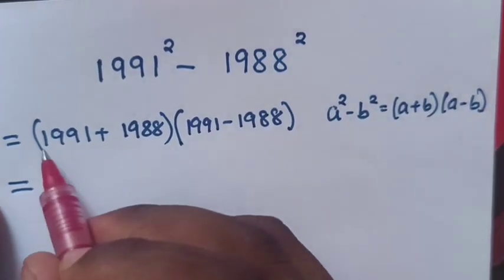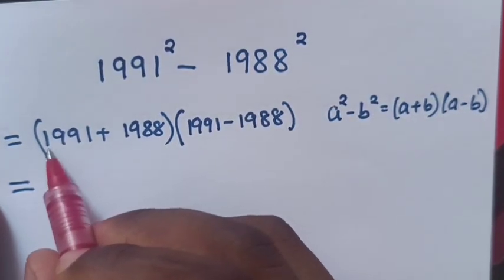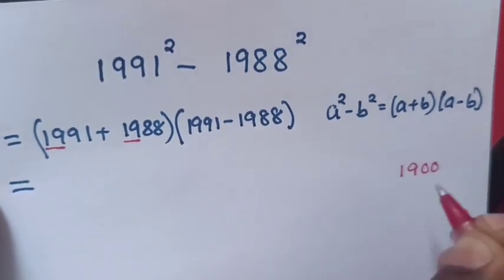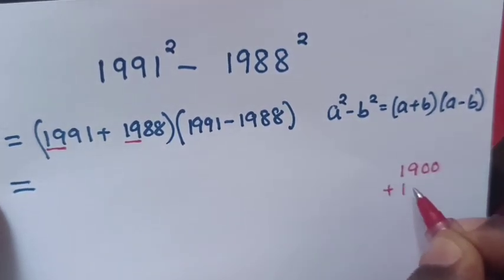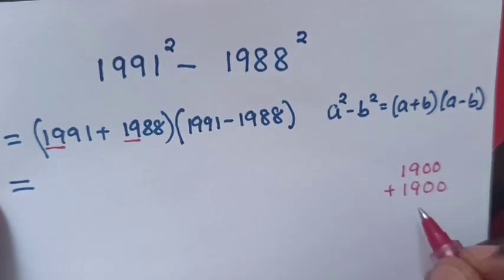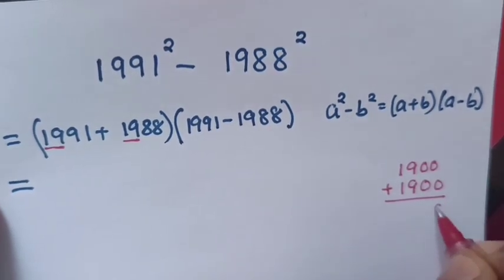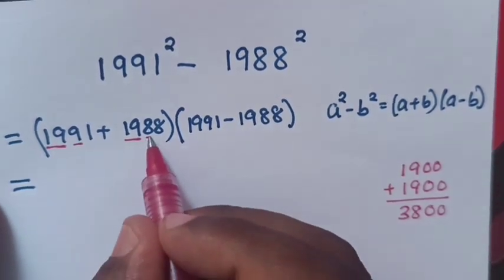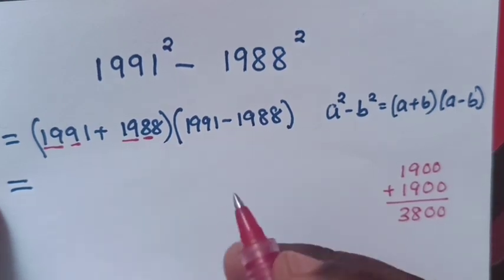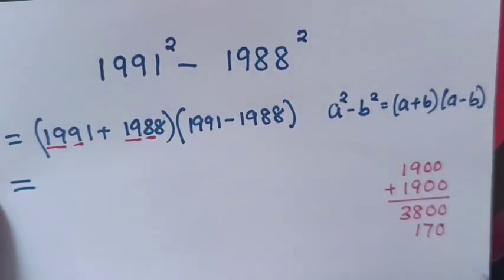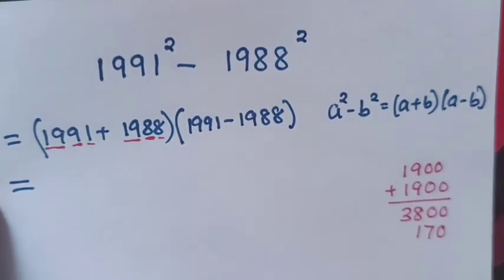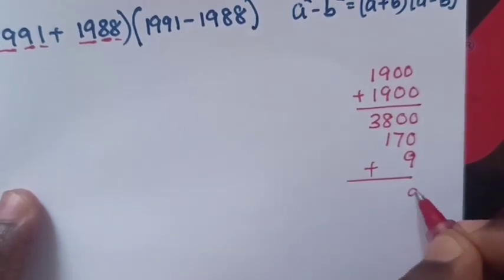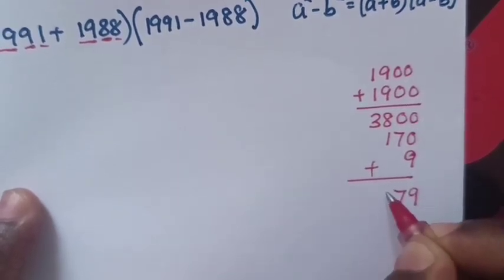From here 1900 and here 1900, we add together 1900 plus 1900, it will be equals to 3800. Now this is 90 plus 80, 90 plus 80 is 170. So we add again 1 plus 8 is 9. So we add together, it will be 3979.